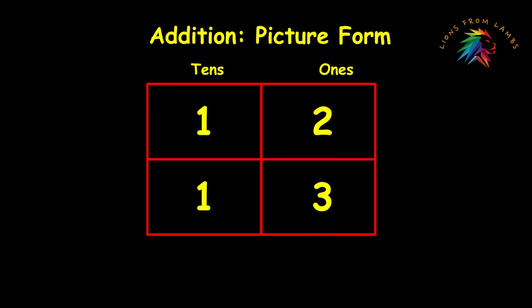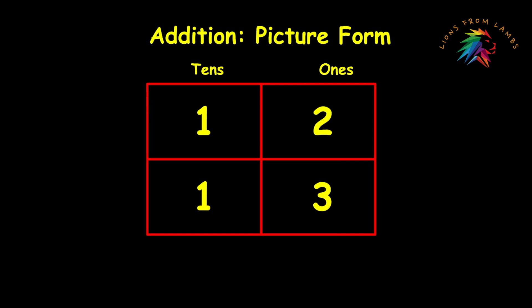So now we can do picture form almost the very same way. 12 becomes one line and two dots and 13 becomes one line and three dots. There's five dots and two lines so we get our answer of 25.